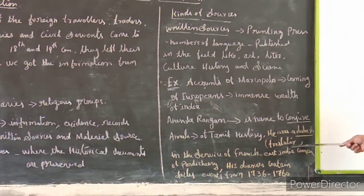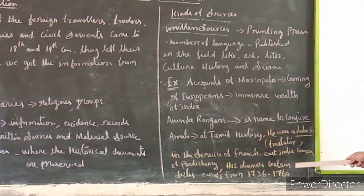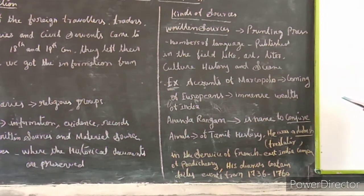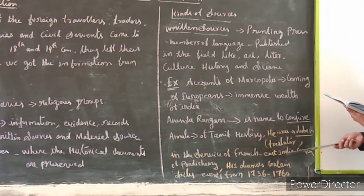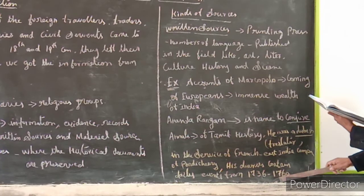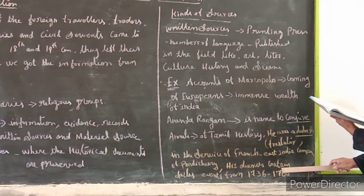Ananda Ranga Pillai served the French East India Company as a chief translator at Pondicherry. His diary spans daily records from 1736 to 1760. He recorded daily information in his diaries, which also has the capacity for giving political judgments. His diary is a most valuable source of history. Written sources include literary sources, accounts, chartered accounts, diaries, autobiographies, government documents, and pamphlets.